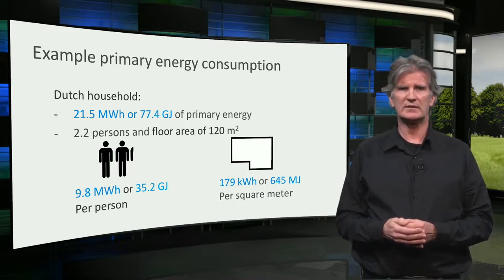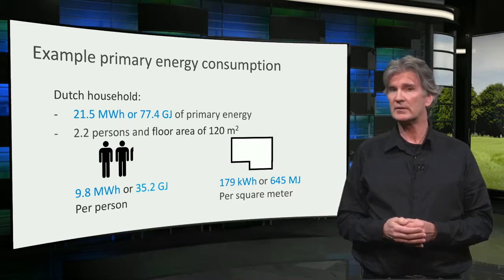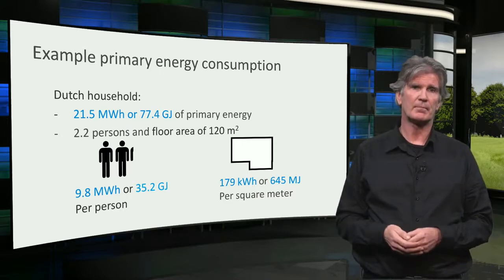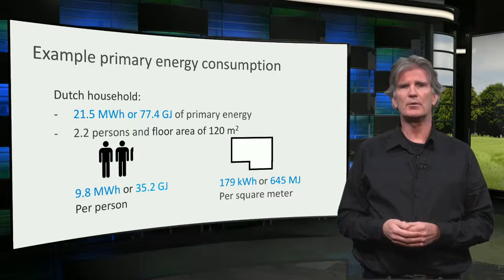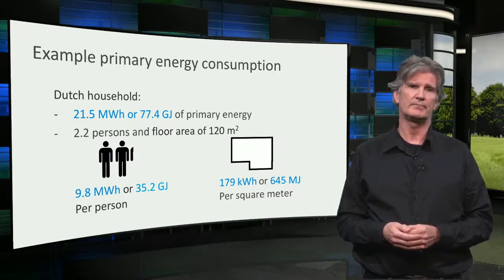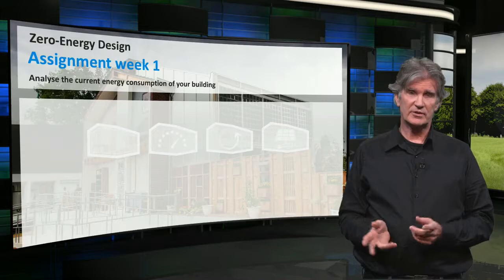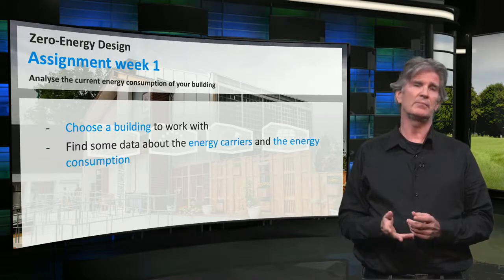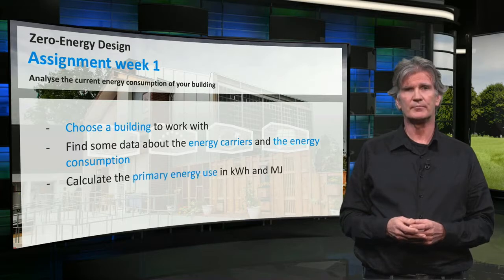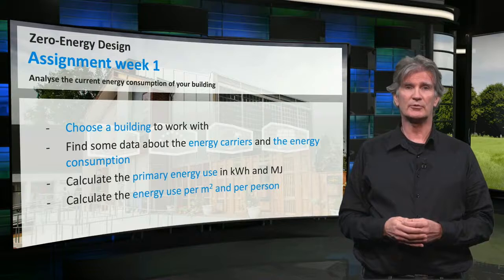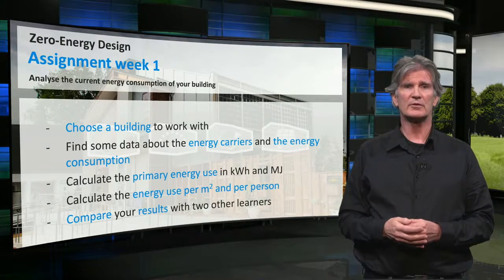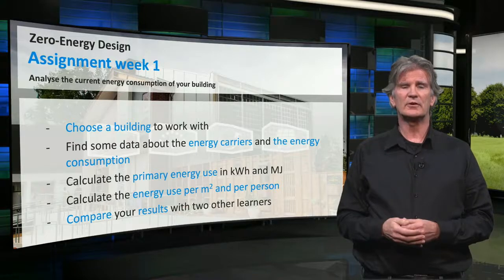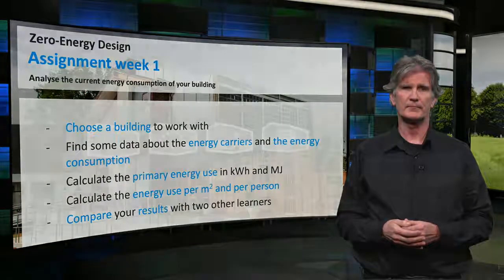When you calculate energy use this way, the numbers are comparable between different building types and different climates. At the end of this week, we will discuss and compare the energy data you have submitted. For the assignment this week: choose a building to work with, find data about the energy carriers and energy consumption, calculate the primary energy use, calculate the energy used per square meter and per person, and compare your result with two other learners. Further instructions can be found on the next page.